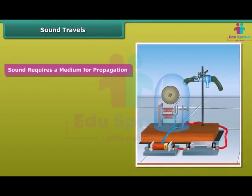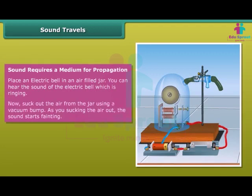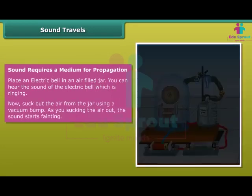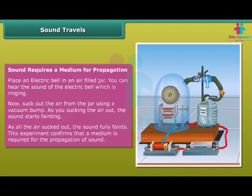Sound requires a medium for propagation. Place an electric bell in an air-filled jar. You can hear the sound of the electric bell ringing. Now suck out the air from the jar using the vacuum pump. As you suck the air out, the sound starts fainting. As all the air is sucked out, the sound fully faints. This experiment confirms that a medium is required for the propagation of sound.